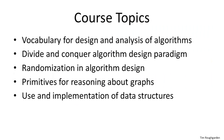Let's start with the specific topics that this course is going to cover. The course material corresponds to the first half of a ten-week Stanford course taken by all computer science undergraduates, as well as many graduate students. There will be five high-level topics, and at times these will overlap. The five topics are: first, the vocabulary for reasoning about algorithm performance; the divide and conquer algorithm design paradigm; randomization and algorithm design; primitives for reasoning about graphs; and the use and implementation of basic data structures.